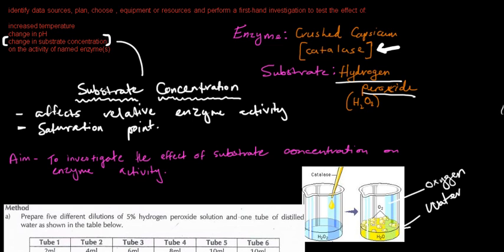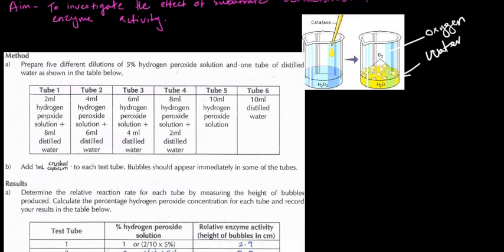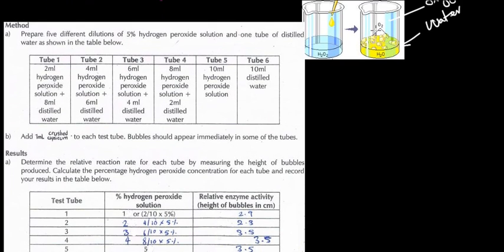Let's go down and have a look at the method. We have to prepare five different dilutions of 5% hydrogen peroxide solution and one tube of distilled water as shown in the table below. In each tube, we've got a different concentration of hydrogen peroxide. As you can see, 2ml of hydrogen peroxide and 8ml of distilled water. From the calculations, you know that's only 1% of hydrogen peroxide.